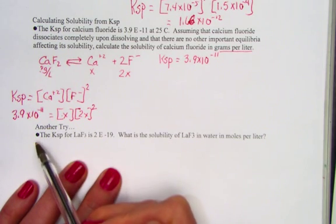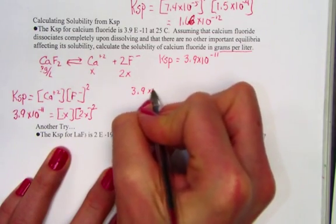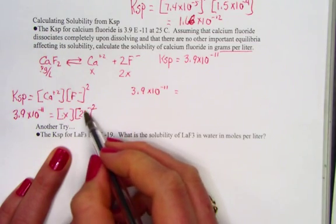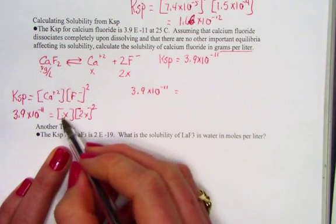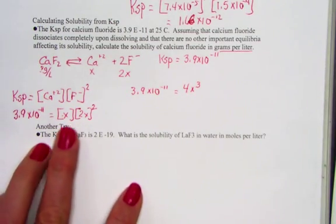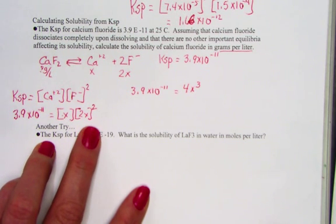3.9 times 10 to the negative 11th, let me just simplify that. 3.9 times 10 to the negative 11th is going to be equal to 4x cubed, by the time I'm done simplifying this algebra on the right-hand side. All righty.